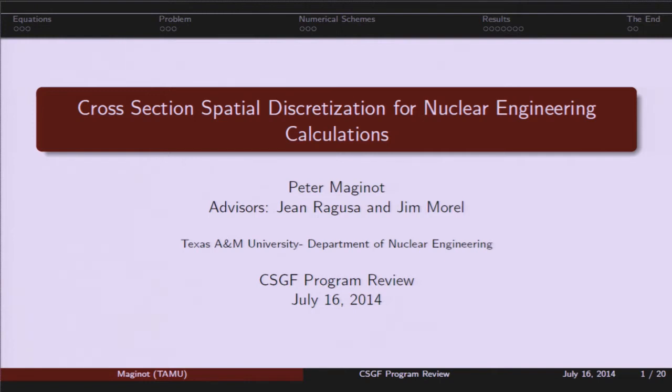Our first speaker this afternoon will be Peter Maginot from Texas A&M University. His field is nuclear engineering, and he did his practicum at Knolls Atomic Power Laboratory. He'll be speaking to us on cross-section spatial discretization for nuclear engineering calculations.